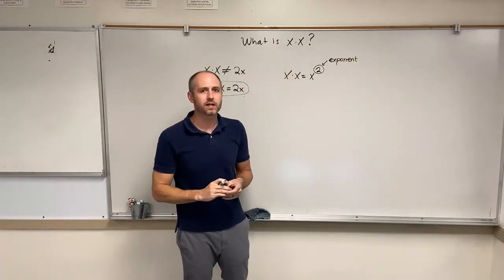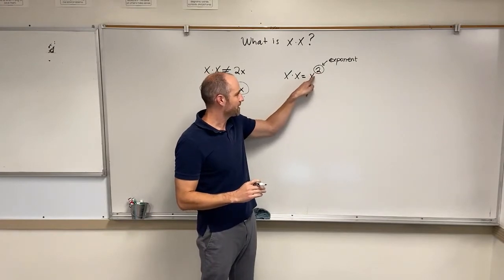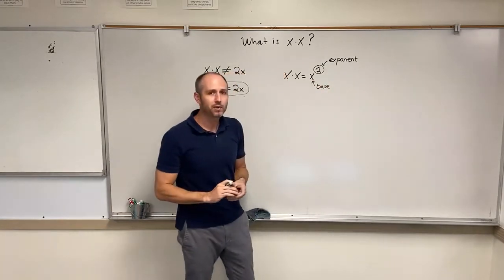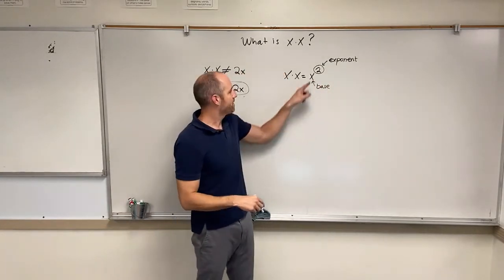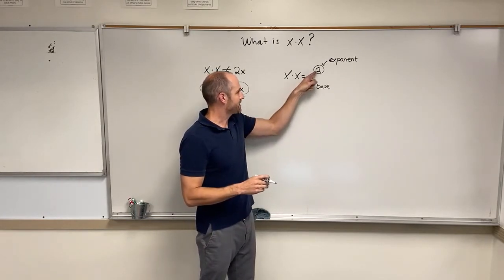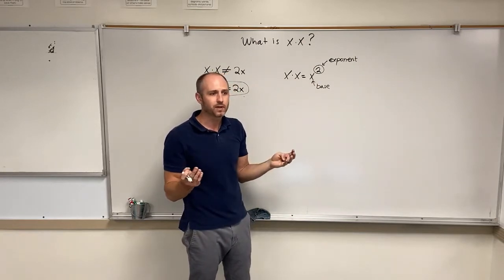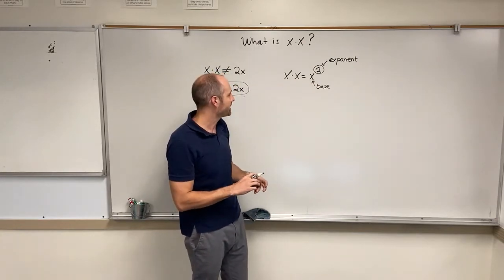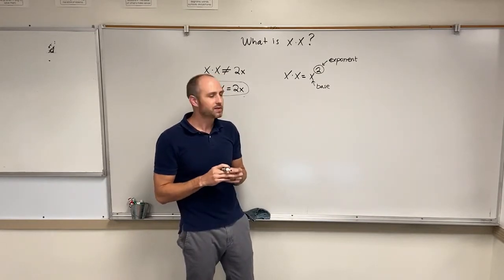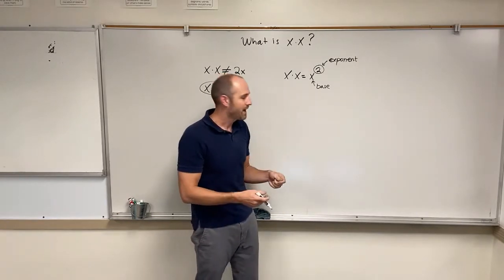And what that exponent is telling you to do is take whatever number is underneath it, called the base, and multiply it by itself that many times. So really x times x and x to the power 2 are just two ways of writing the same thing. It's just a different notation, a different way of writing it. The word squared actually comes from the geometric representation of what x times x is.